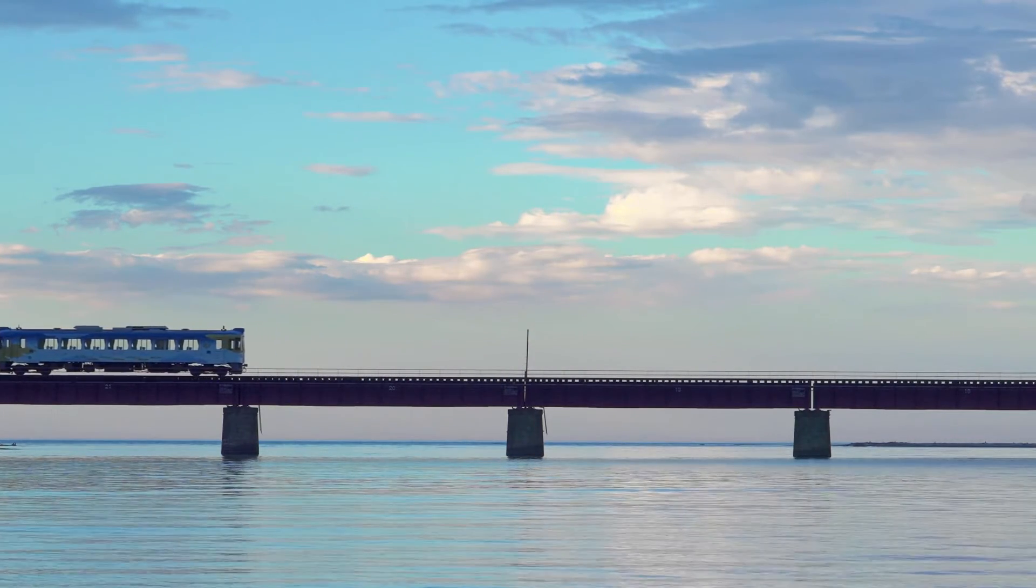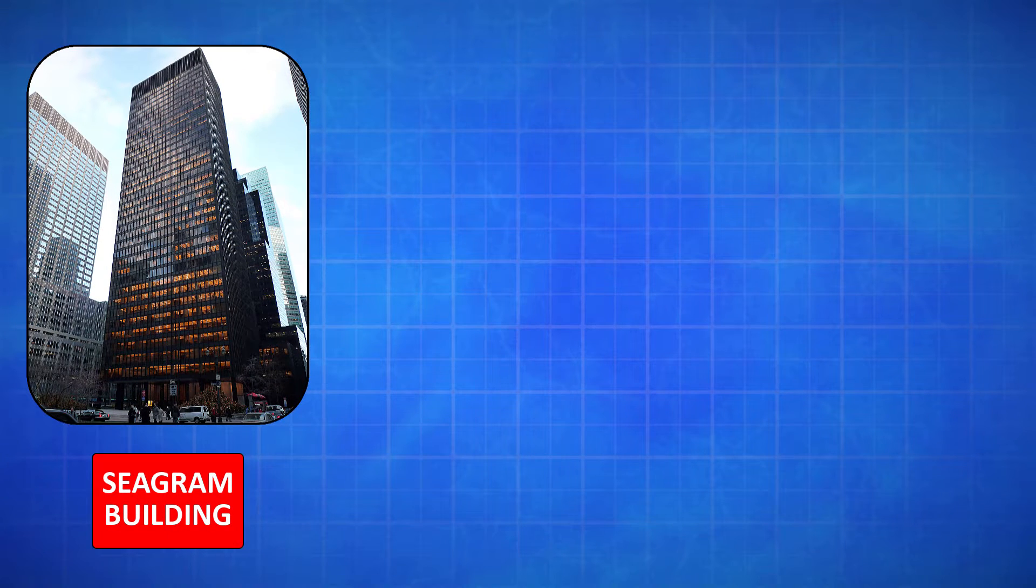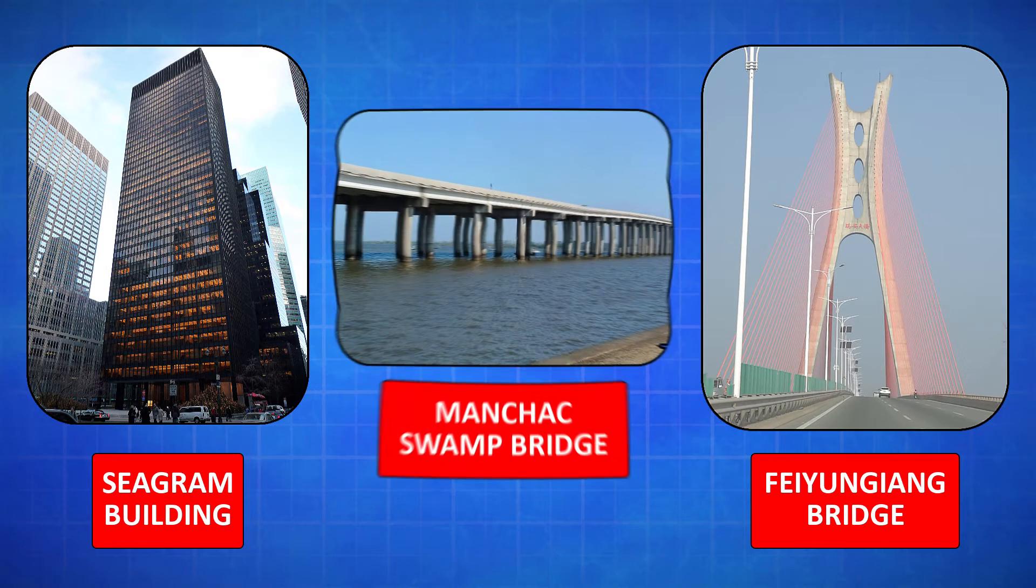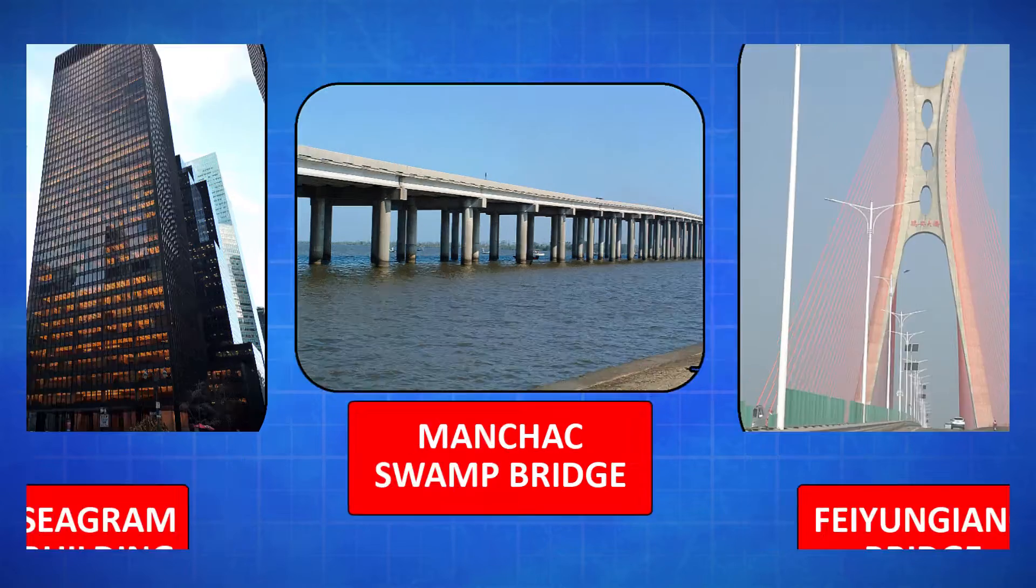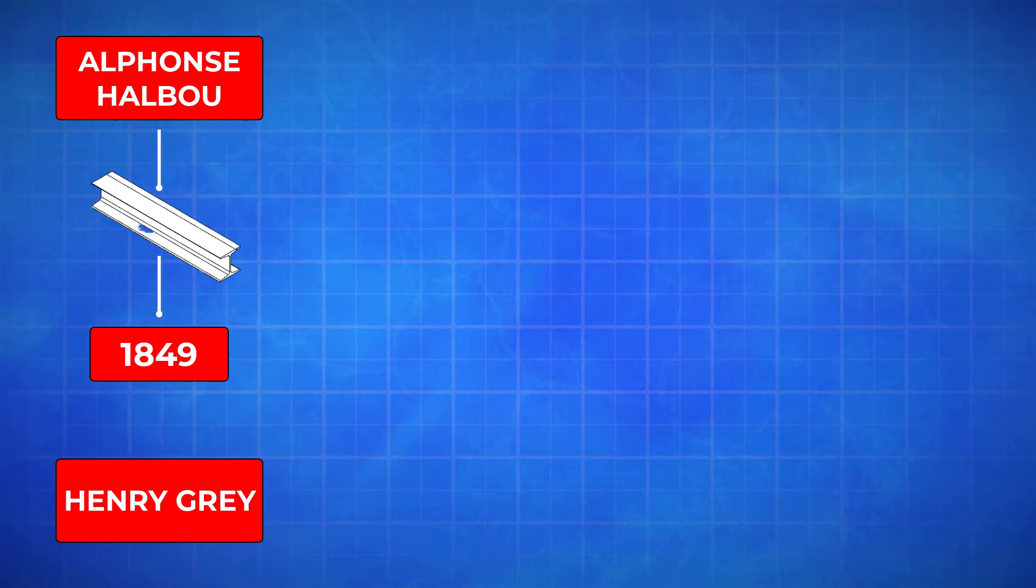The I-Beam is a backbone of any engineering construction. The world-famous Seagram Building, Fungiang Bridge, and Manchang Swamp Bridge all made possible with the use of this beam. It all started when German engineer Alphonse Halbo invented the first I-Beam in 1849, and then British engineer Henry Gray perfected this I-Beam in 1898 for wider use in the construction industry.